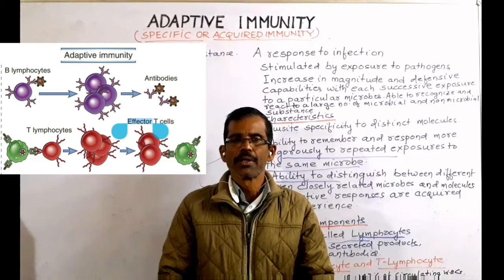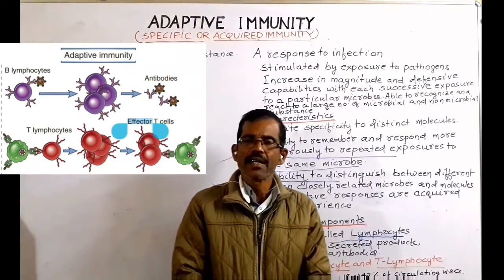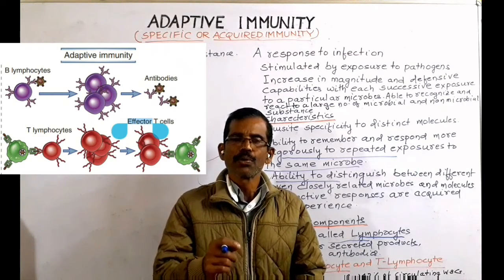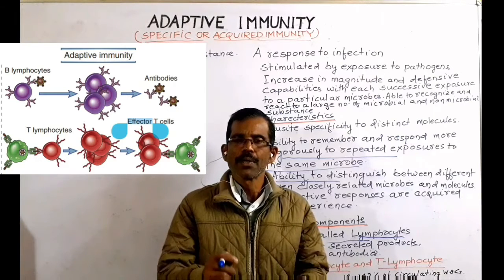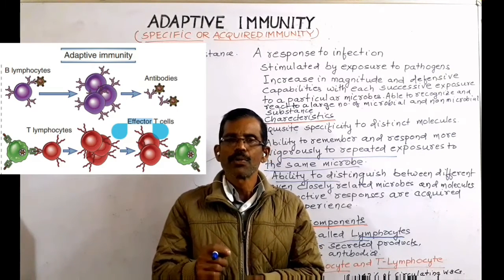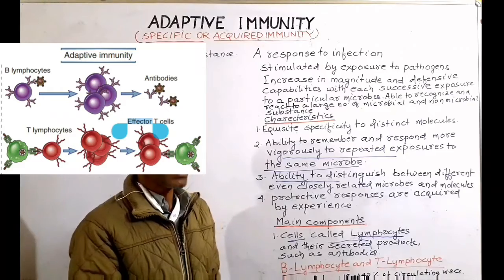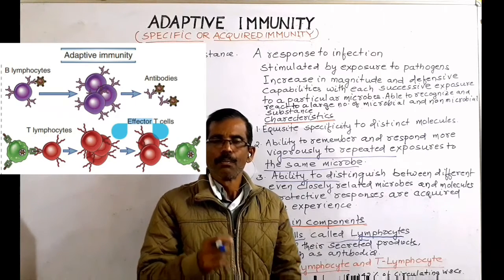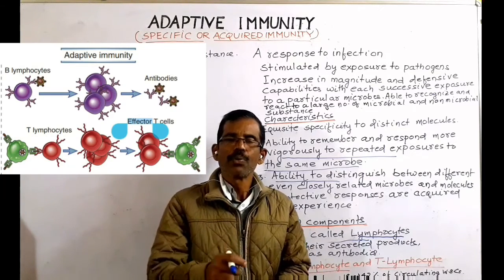The principal components of adaptive immunity are cells called lymphocytes and their secreted products such as antibodies. Lymphocytes include B-lymphocytes and T-lymphocytes. B-lymphocytes are associated with humoral immunity, whereas T-lymphocytes are associated with cell-mediated immunity. B-lymphocytes and T-lymphocytes make up between 18 and 42 percent of the circulating white blood cells, and because these cells are the main cell types found in the lymph, the name lymphocytes has been given.